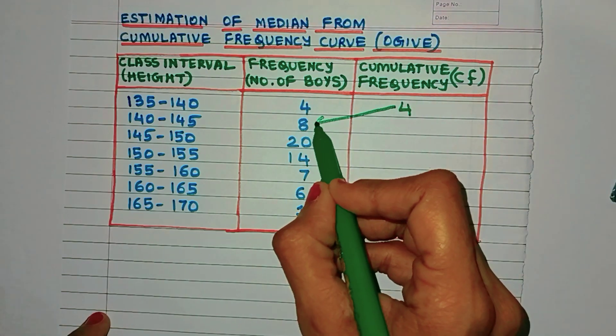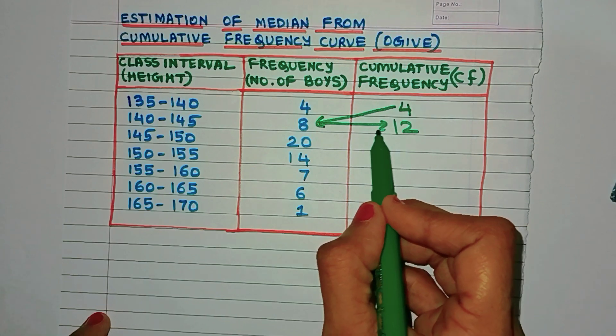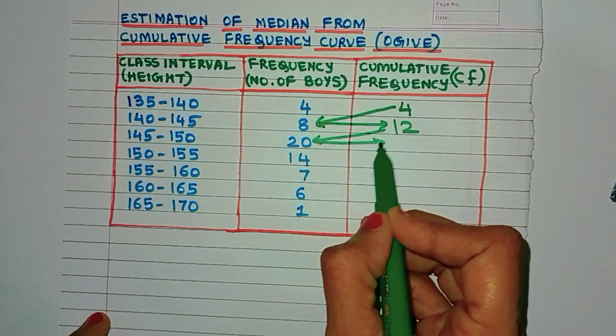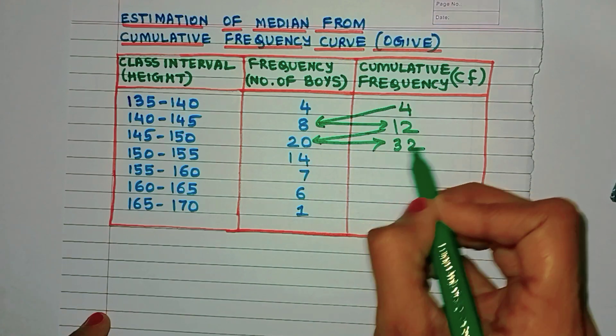So in this case, we will add 4 to 8 and we will get 12. I hope you understood this. You can even use these arrows to help you get the answer. So 12 plus 20, we'll get 32.